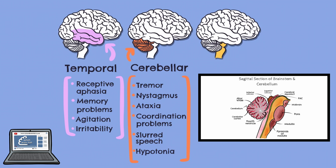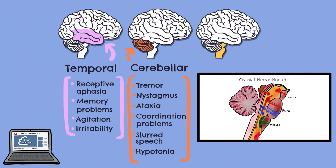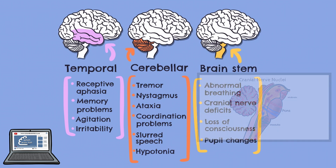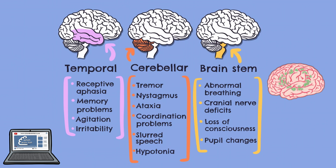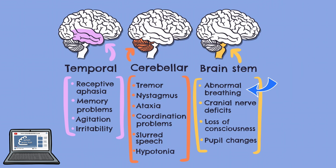Additionally, with the exception of cranial nerve 1, the olfactory nerve, and cranial nerve 2, the optic nerve, all other cranial nerves emerge from the brain stem and are thus also prone to injury. Brain stem damage is rare, with most injuries resulting from swelling in other areas of the brain causing the brain stem to compress against the skull. Injury can also occur after a brain stem stroke or a diffuse axonal injury. Damage to the brain stem can result in abnormal breathing, cranial nerve deficits, loss of consciousness, pupil changes, and swallowing issues.